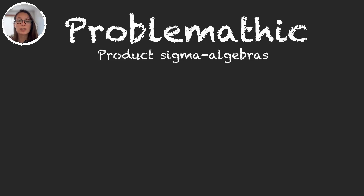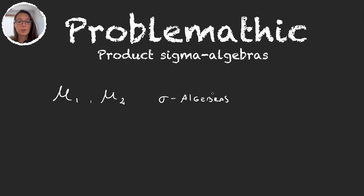Let me start by defining an algebra. I'm going to change notations a little bit. Let's say I have two sigma-algebras, m1 and m2 — in the previous video I was using the letter b, but I'm going to reserve that letter just for the Borel sigma-algebra. So we have two sigma-algebras, and I want to define the product sigma-algebra. I'm going to start with something smaller: an algebra that is just a set of any possible union of rectangles.